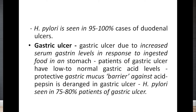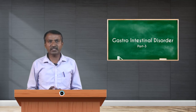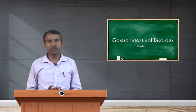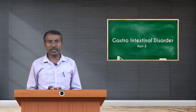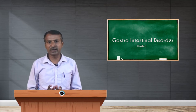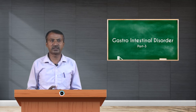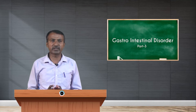When looking at gastric ulcers, they are due to increased serum gastrin levels in response to ingested food. Patients of gastric ulcer have low to normal gastric acid levels. The protective gastric mucosa barrier against acid pepsin is deranged in cases of gastric ulcers. H. pylori is commonly seen in 75 to 80 percent of patients with gastric ulcers.